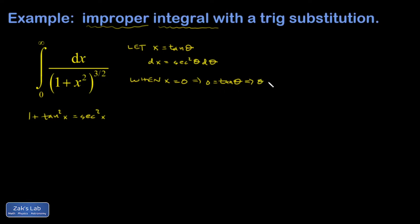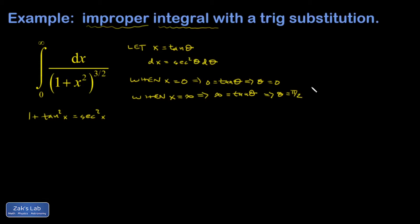When x is equal to infinity — maybe I should say when x approaches infinity — I need to find what angle theta gives an infinite tangent. That's pi over 2, the top of the unit circle, because the sine function approaches 1 while the cosine approaches 0, giving a ratio that blows up to infinity. So the upper limit transforms to pi over 2.